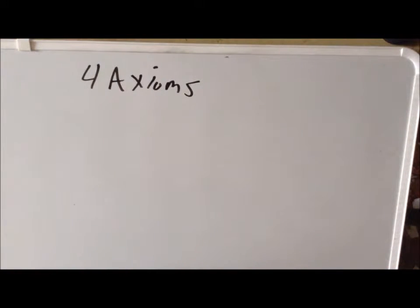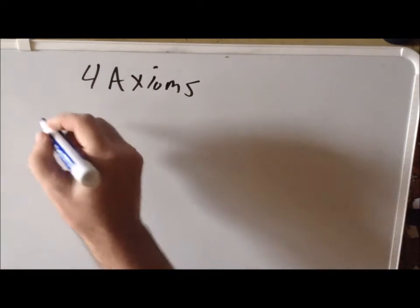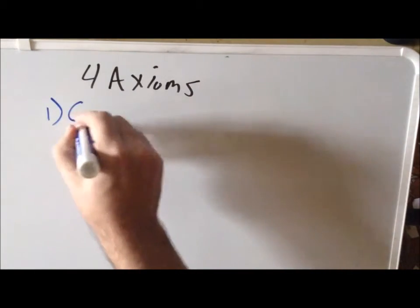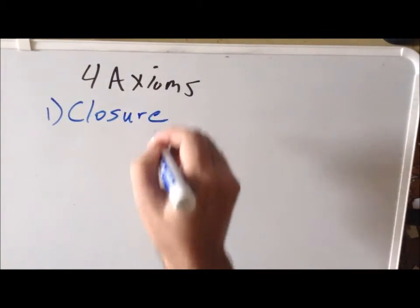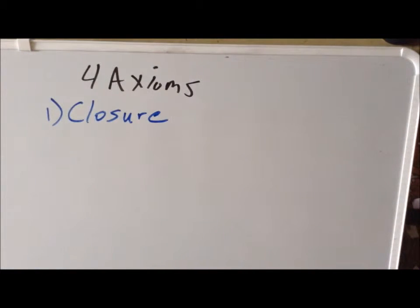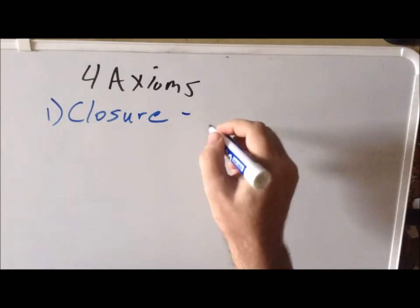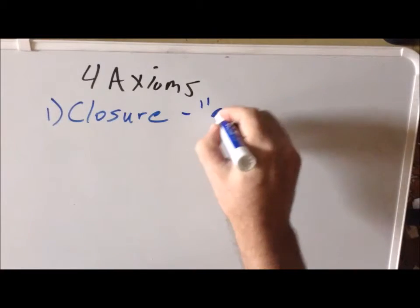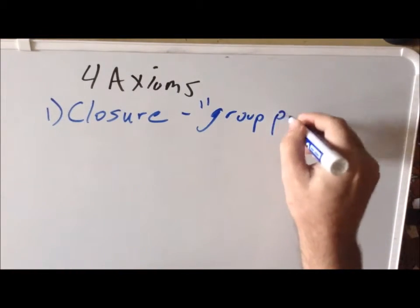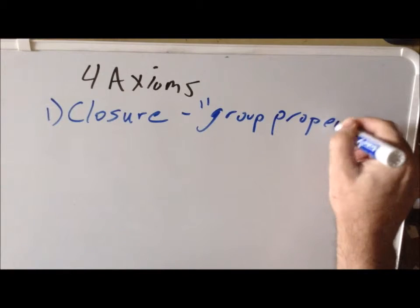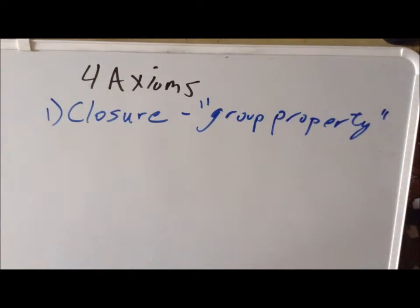The first axiom is the property of closure. Closure means that if I take any two elements of the group and multiply them together — perform that group operation — I'm going to get another member of the group. This is often called colloquially the 'group property.' Closure is the first property that our set has to follow for it to be a group.